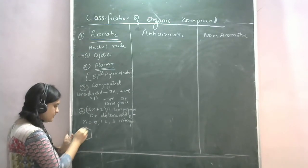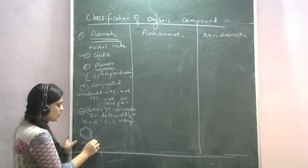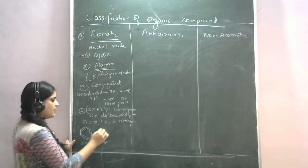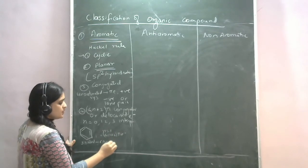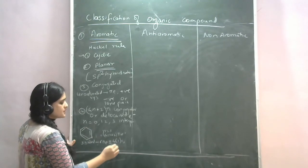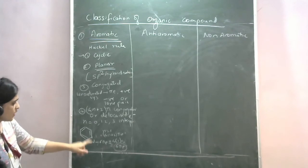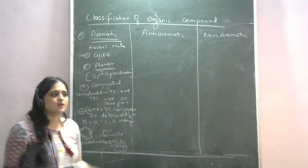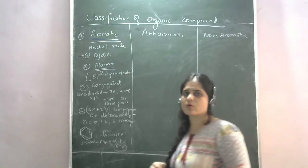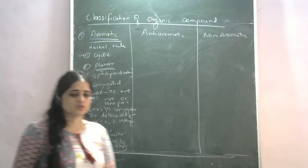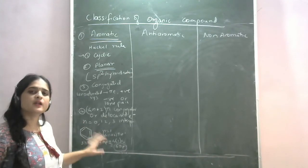This structure has 3 pi bonds, which means a total of 6 pi electrons. If we take N = 1, the formula gives us 4(1) + 2 = 6. So the compound has 6 pi electrons and follows the formula — therefore this structure is aromatic. If the compound has 4N + 2 pi electrons, we can call it an aromatic compound.